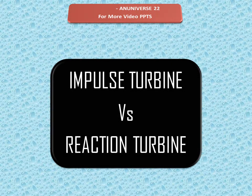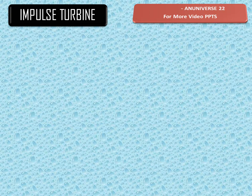Today we learn about Impulse Turbine vs Reaction Turbine — what is the difference between them? In an impulse turbine, the pressure energy of water is stored in the fluid as it flows from the head race to the inlet of the turbine through the penstock.